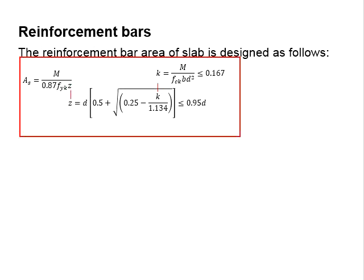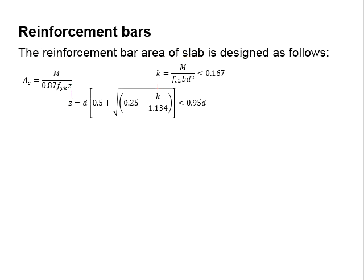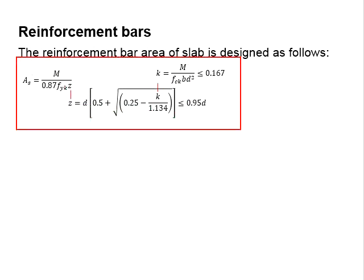This is the same set of equations used to determine the area of reinforcement for the beam. As the cross-section of the slab is normally large, the slab seldom requires compressive steel bars. Therefore, the equations to derive the reinforcement bar area for the slab are relatively straightforward.